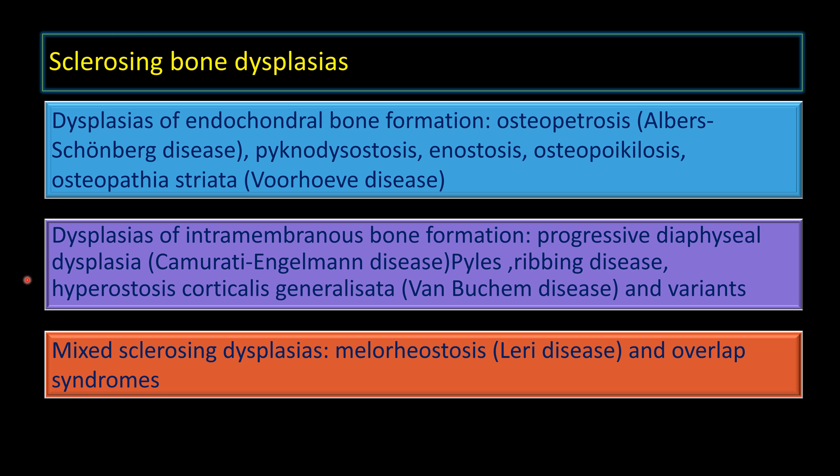Intramembranous dysplasias also include Pyle's disease, Ribbing's disease, Van Buchem's disease and its variants. Others are mixed sclerosing dysplasias such as melorheostosis and overlap syndromes.